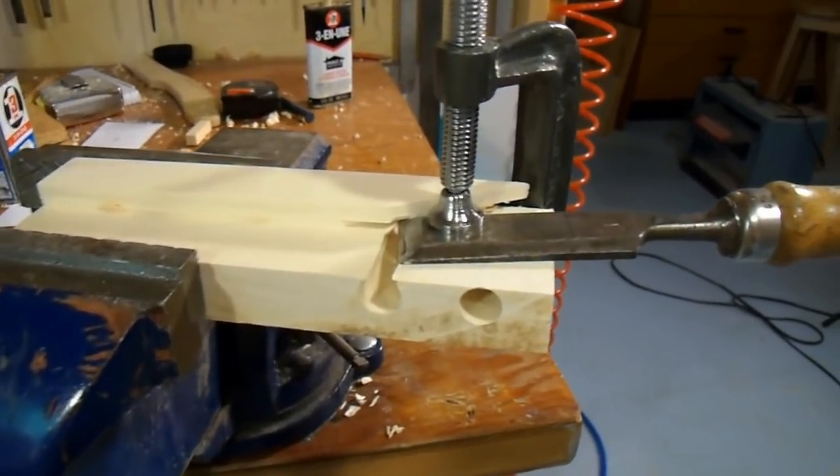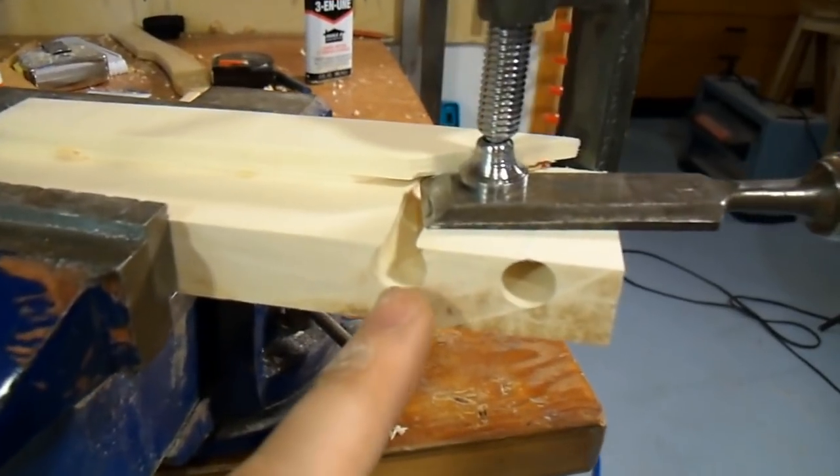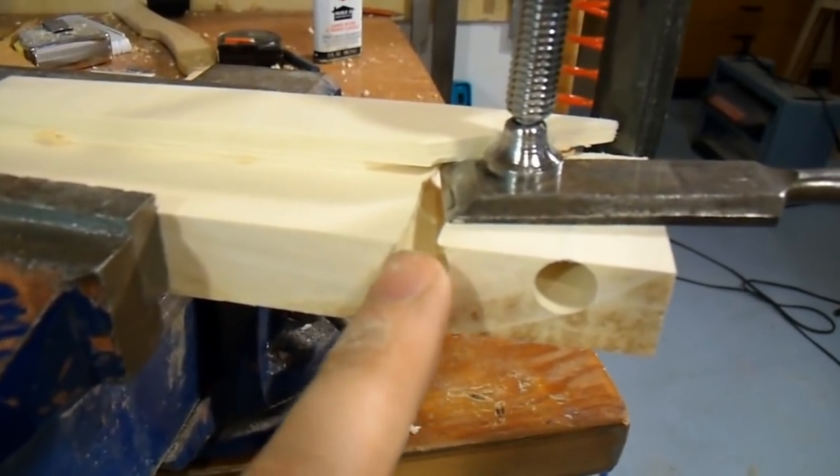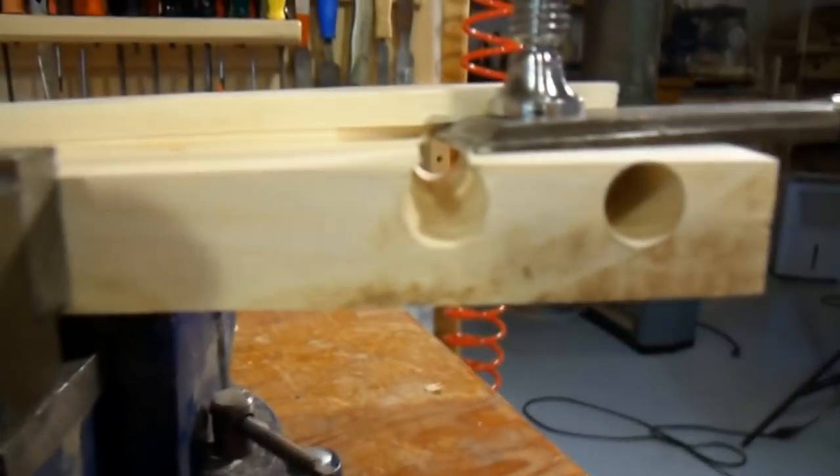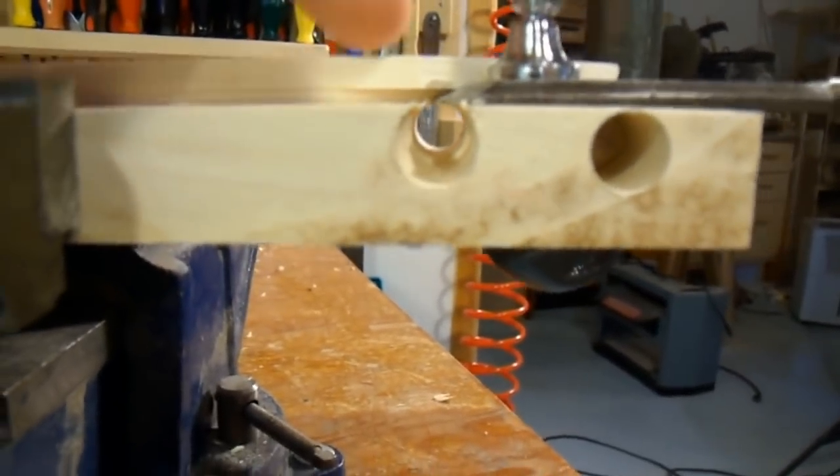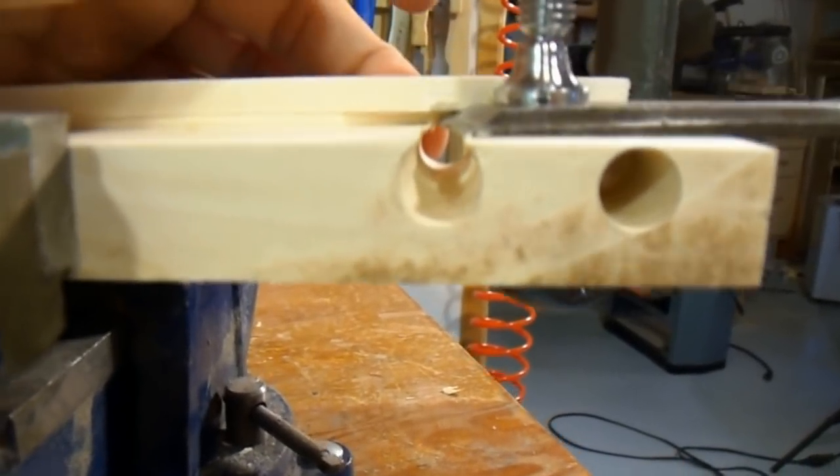This jig works a lot like the old pencil sharpeners. I've got a hole here that's large enough to accommodate the sticks that I've just cut. And I've got a chisel position here. And towards the back there's a smaller hole that's 3/8ths which is exactly the size dowel that I want.